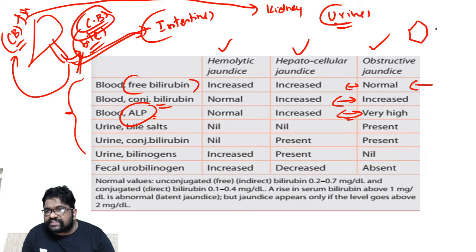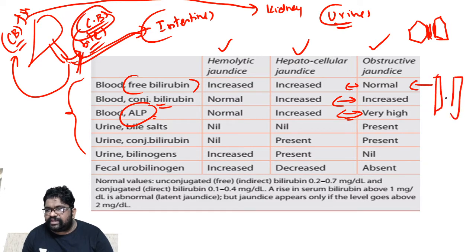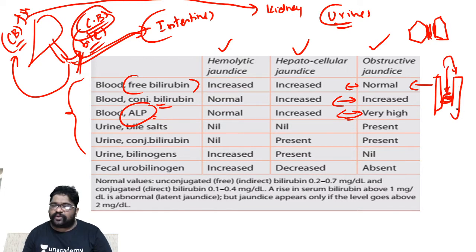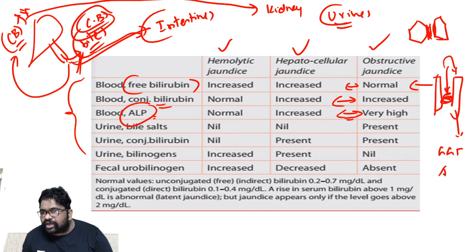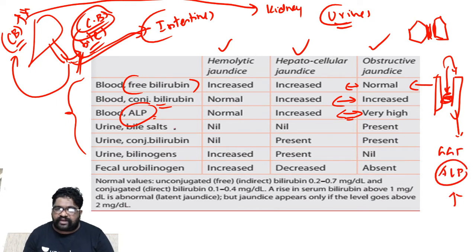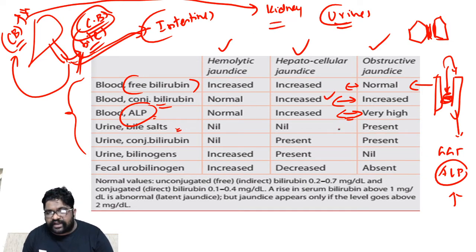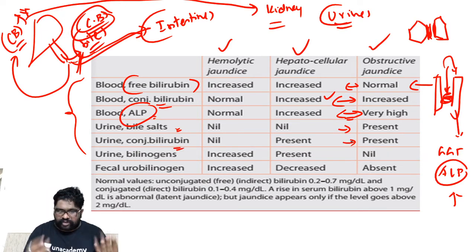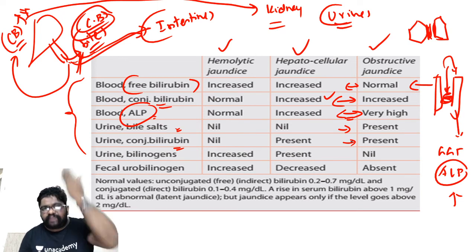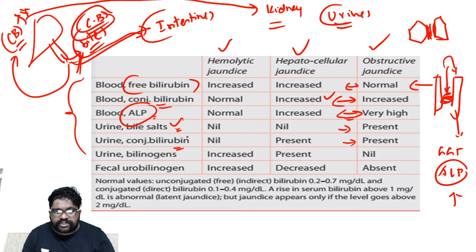Between two hepatocytes you have the biliary canalicular epithelial cell, which contains GGT and ALP. When there is obstruction, the stone obstruction or extra bile pressure can pressurize the canaliculi. The canaliculi start releasing GGT and ALP, causing ALP elevation. Conjugated bilirubin through the blood goes to the kidney and comes out in the urine, so urine bile salts and urine conjugated bilirubin are both present.